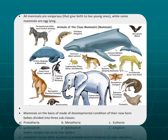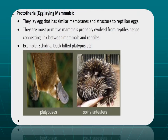The figure shows different mammals. The first subclass of Mammalia is Prototheria, also known as monotremes. They are egg-laying mammals whose eggs have a similar membrane and structure to reptile eggs. They are the most primitive mammals, probably evolved from reptiles and therefore represent a connecting link between mammals and reptiles. Examples include the duck-billed platypus and spiny anteaters.